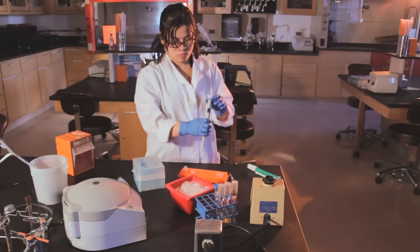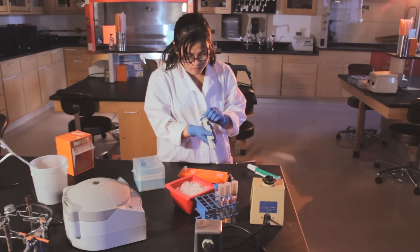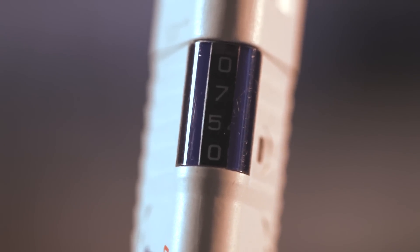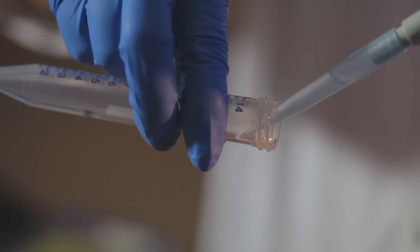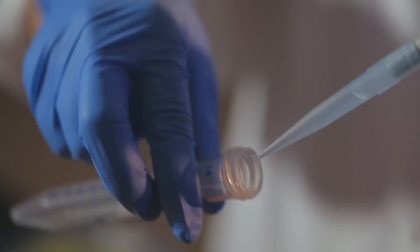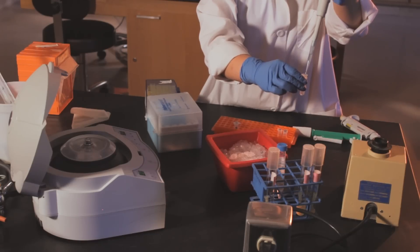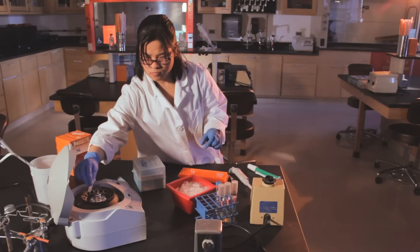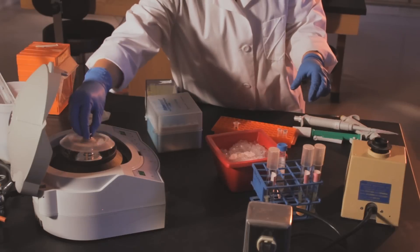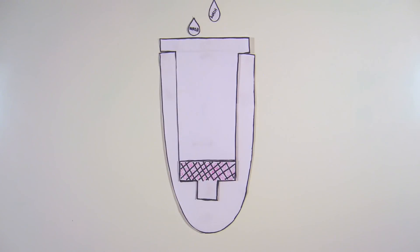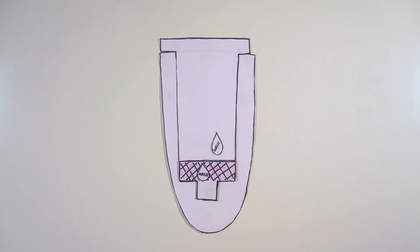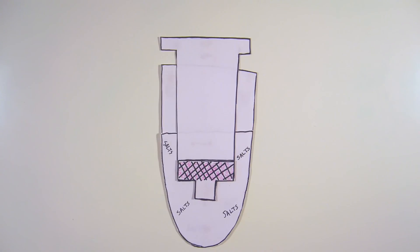To remove the salts left over from the buffer, wash the spin column by adding 750 microliters of wash buffer, which contains approximately 70% ethanol. The salts are soluble in 70% ethanol, but the DNA is insoluble. Centrifuge for one minute. The insoluble plasmid DNA remains bound to the silica membrane, while the flow-through carries away the salt. Discard the flow-through.